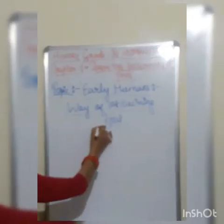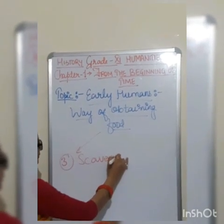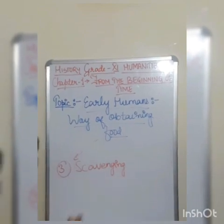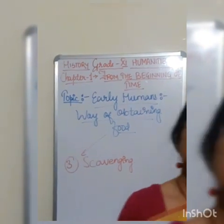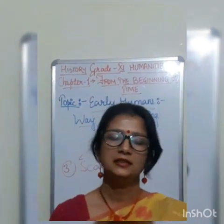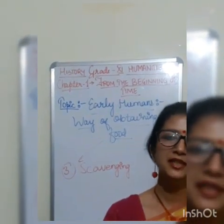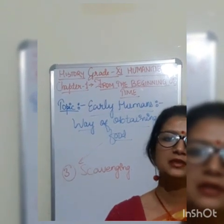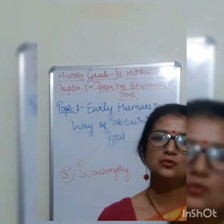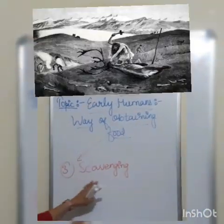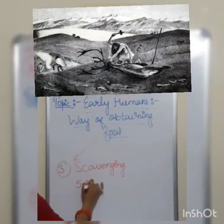The next method of collecting food was scavenging. In this method, if any hunter had killed an animal or any animal had died, early men would clean the dead remains of that animal, take out the flesh, and then eat it. This process is called scavenging, which was very popular and started around 5 lakh years ago.